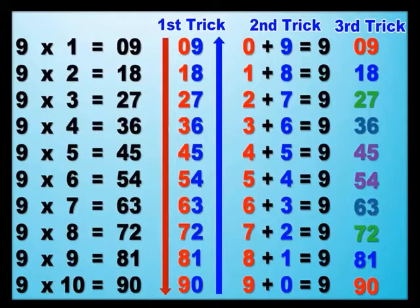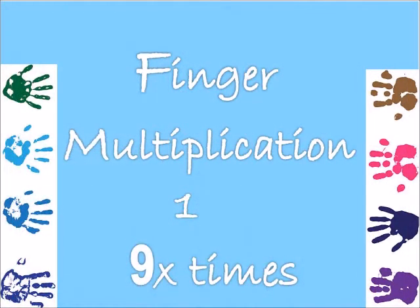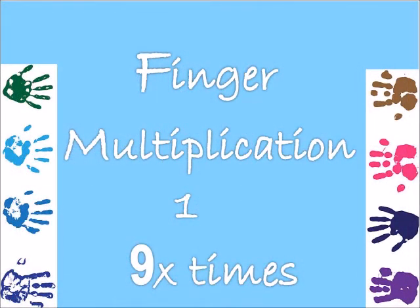So when you finish, you can see that zero plus nine equals nine; one plus eight equals nine. So all the answers, when you add the digits up, you arrive at nine.